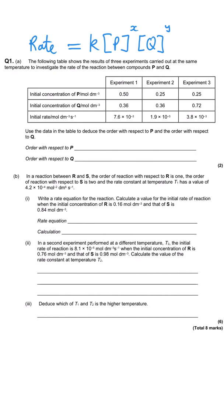It doesn't really matter which chemical you start with — let's start with P. We need to find two experiments where the concentrations of P are different. We can't choose experiments two and three because P is the same in both. Comparing experiment two to experiment one, the concentration of P is twice as big, and the concentration of Q is the same in both, so any change in rate is entirely down to the change in concentration of P.